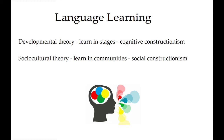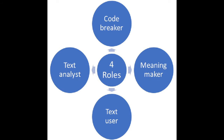To address the question of what to learn, researchers have constructed theoretical frameworks to categorise the range of literary practices learners need in their repertoires. One influential framework is the four-resources model, which states that literacy competence requires learners to develop the four roles of code-breaker, meaning-maker, text-user, and text-analyst.